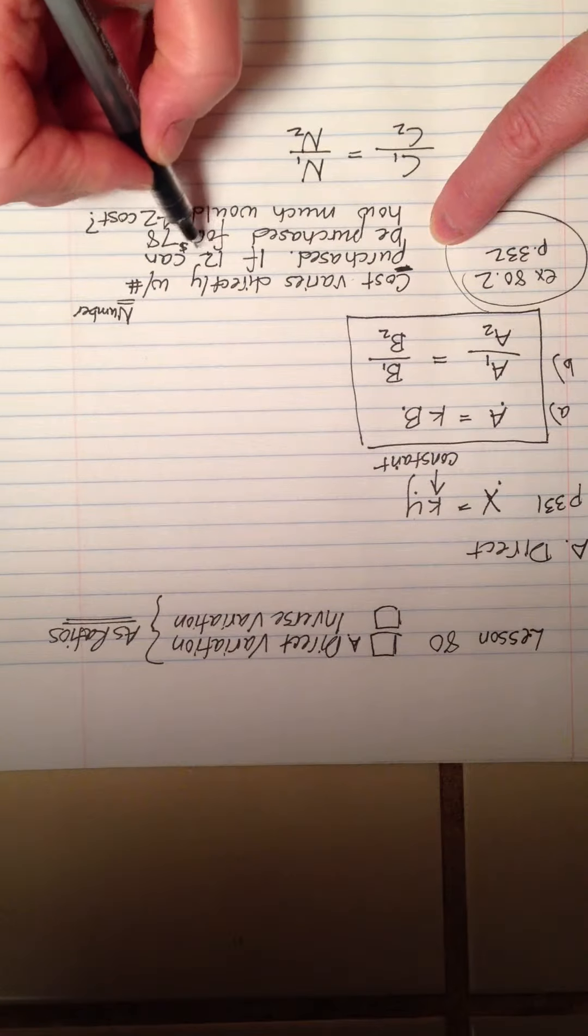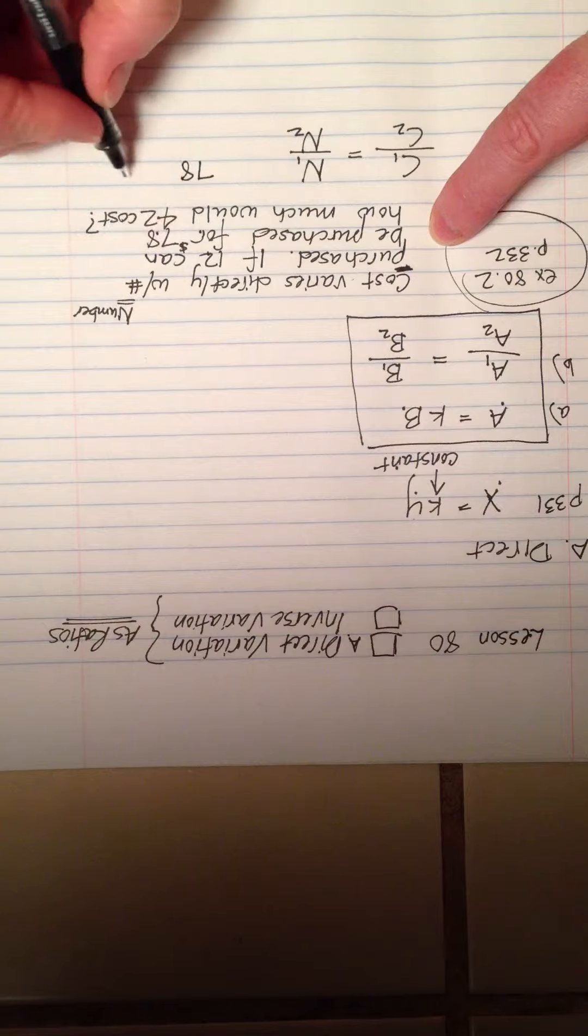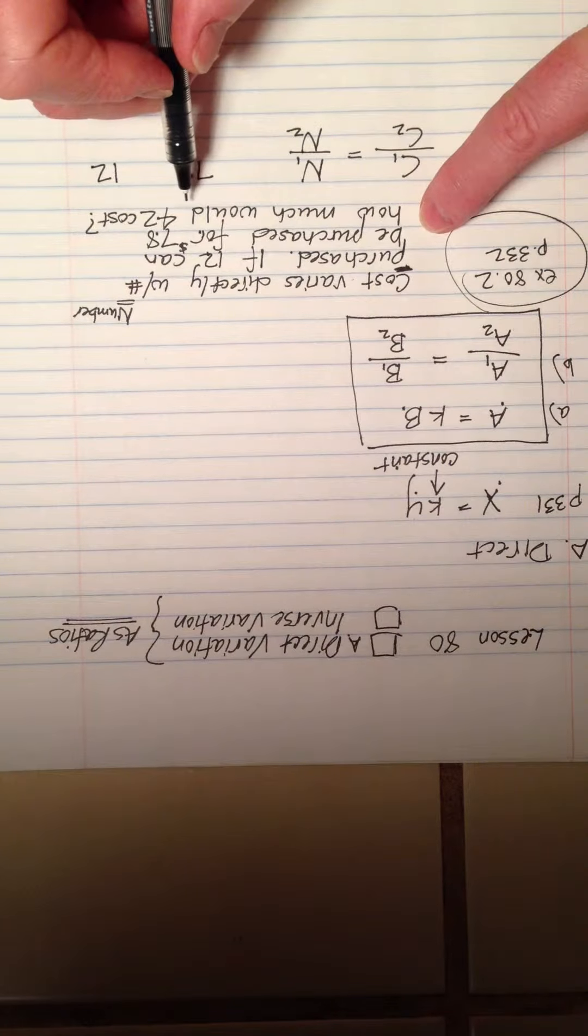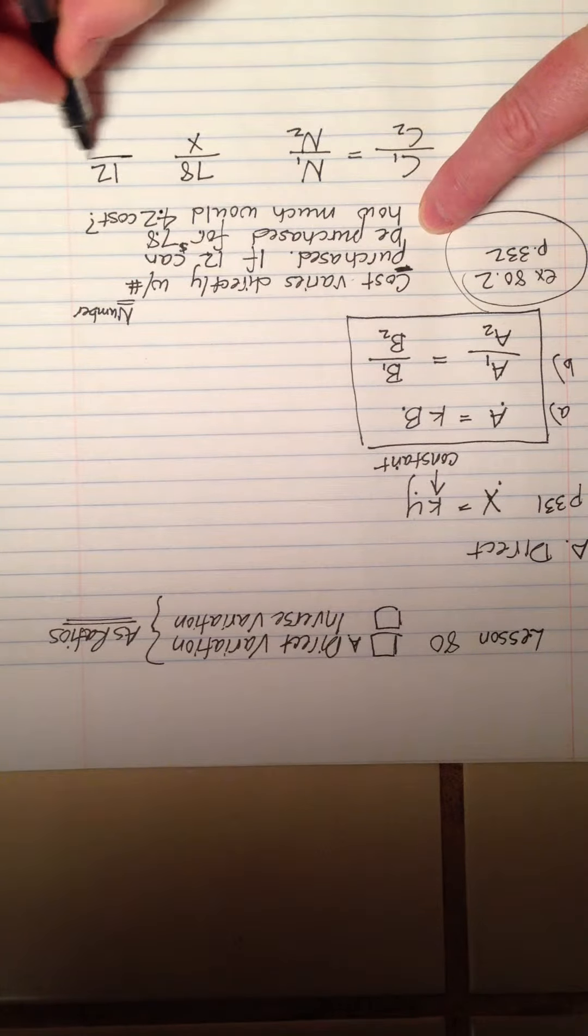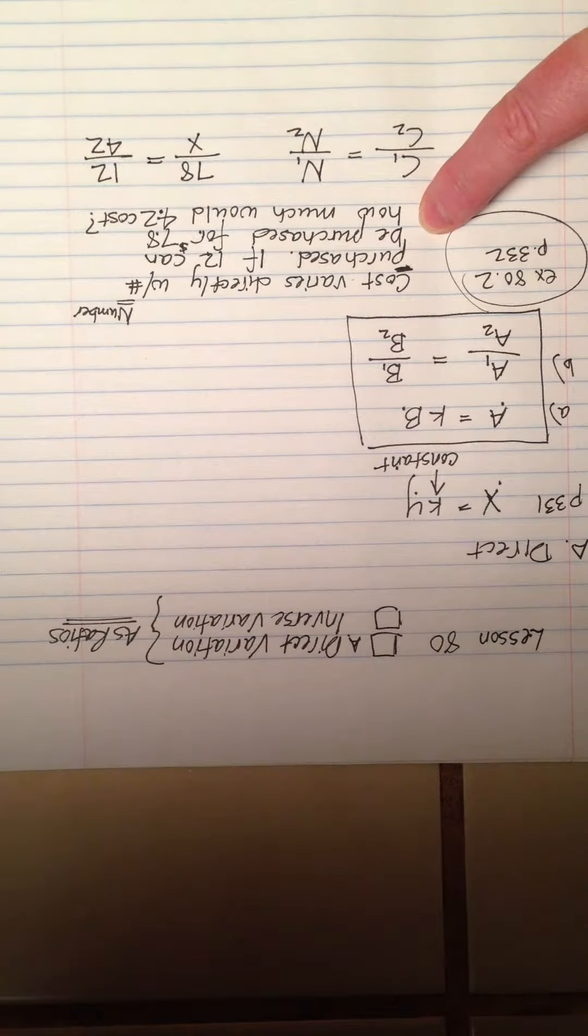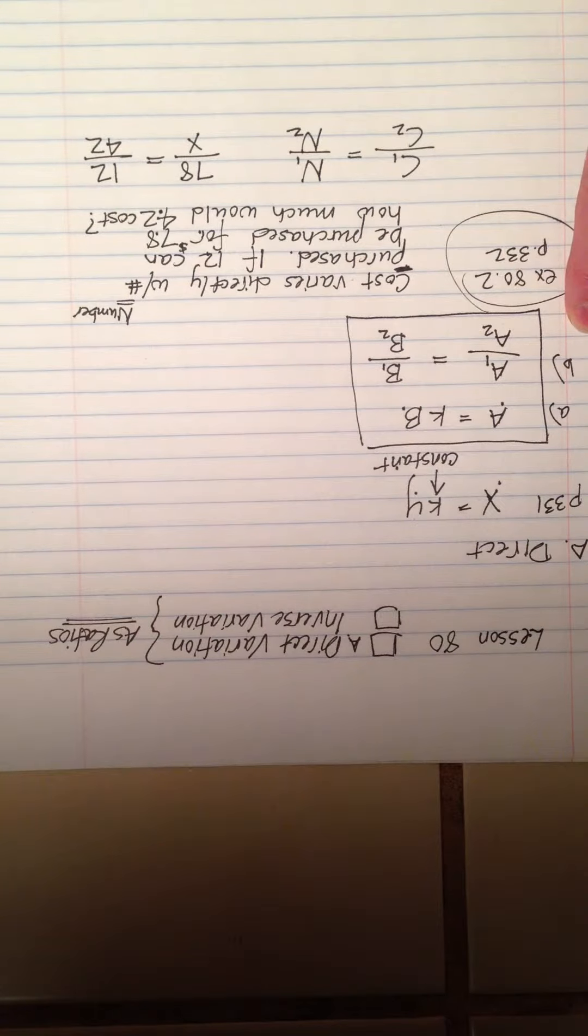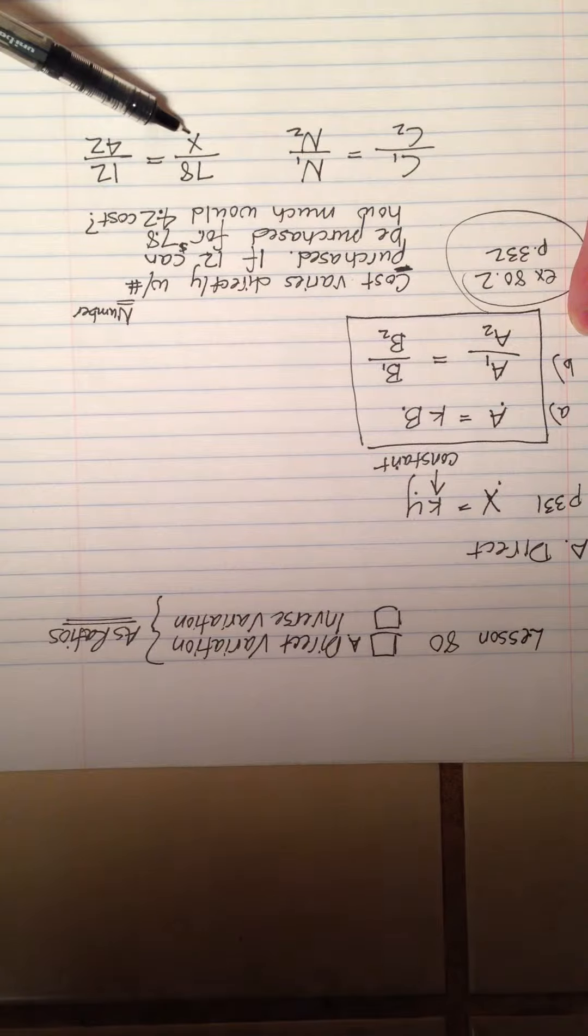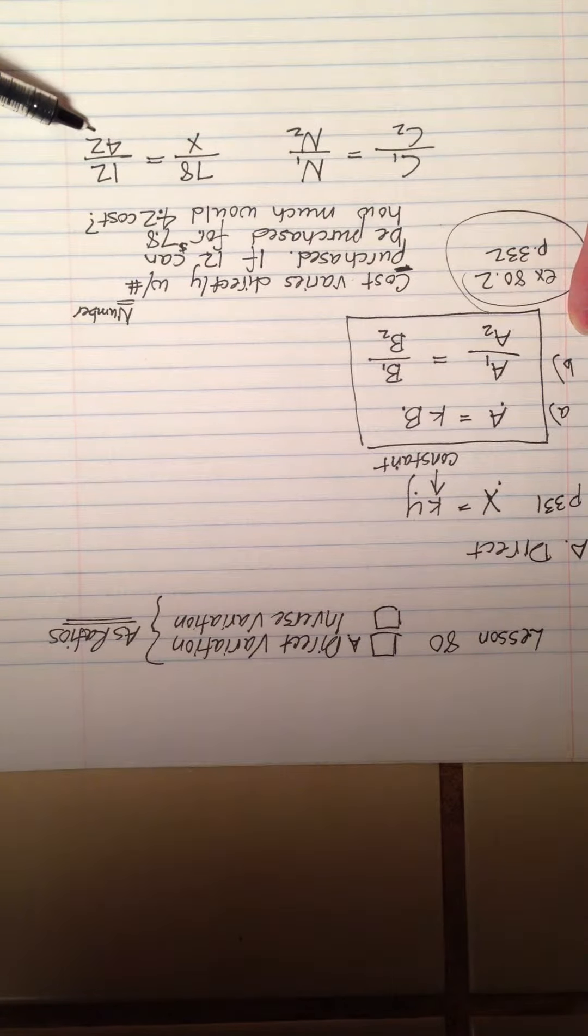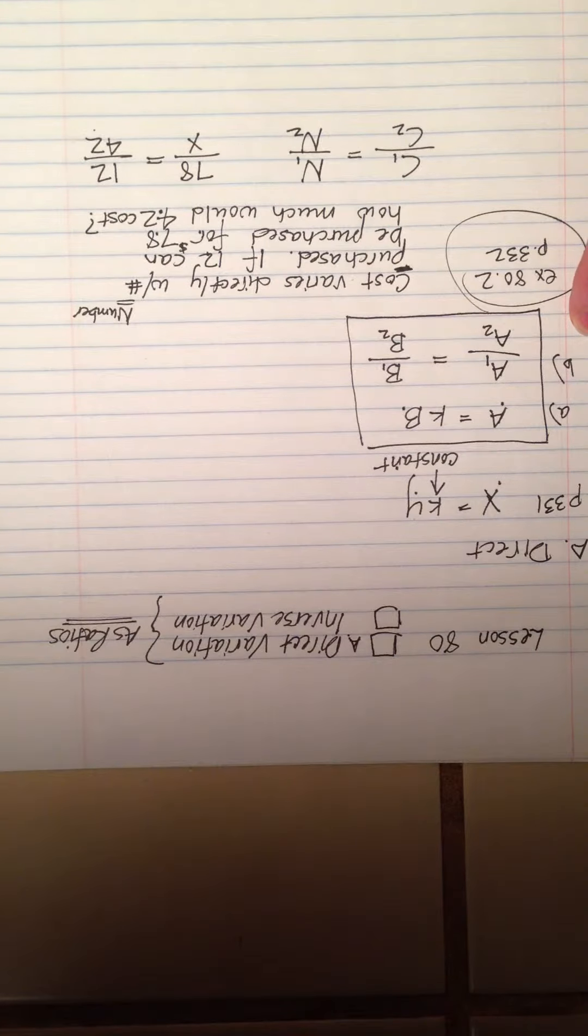I'm going to say the first cost over the second cost is going to be equal to the first number over the second number. Now it's just a simple matter of plugging in. Twelve can be purchased for seventy-eight, so seventy-eight is my first cost. Twelve is my first number purchased. And they're asking me how much would it cost, so there's my X. For forty-two, that's my second number. There's the problem right there. We're not going to worry about creating that constant. We just know that the relationships between these numbers are going to hold, so we set it up as a ratio.